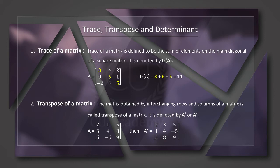Now, the next topic is transpose of a matrix. The matrix obtained by interchanging rows and columns of a matrix is called the transpose of a matrix. That is the transpose of a matrix.